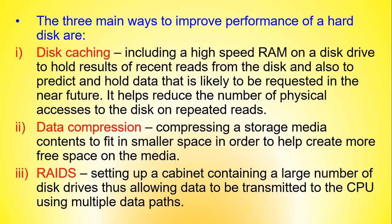Three main ways to improve the performance of a hard disk drive are: disk caching — including high-speed RAM on a disk drive to hold results of recent reads and to predict and hold data likely to be requested in the near future, reducing physical accesses on repeated reads; data compression — compressing storage media contents to fit in a smaller space, increasing the amount of data the hard disk can hold; and RAID — setting up a cabinet containing a large number of disk drives allowing data to be transferred to the CPU using multiple data paths.